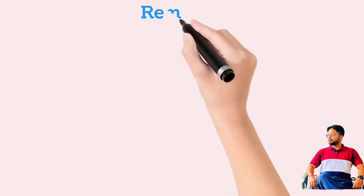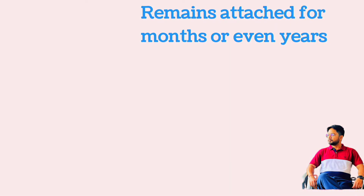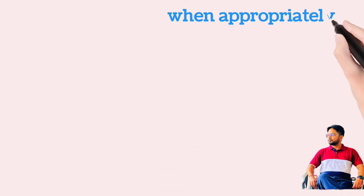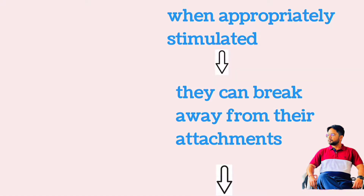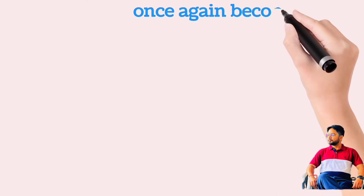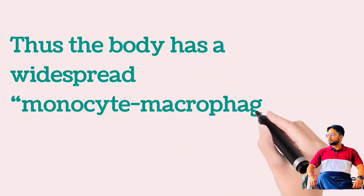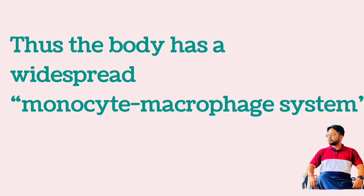After entering the tissues, monocytes become macrophages. Another large portion of monocytes become attached to the tissues and remain attached for months or even years until called upon to perform specific local protective functions. They have the same capabilities as mobile macrophages to phagocytose large quantities of bacteria, viruses, necrotic tissues, or other foreign particles. When appropriately stimulated, they can break away and once again become mobile macrophages that respond to chemotaxis and all other stimuli related to the inflammatory process. Thus the body has a widespread monocyte-macrophage system in virtually all tissue areas.